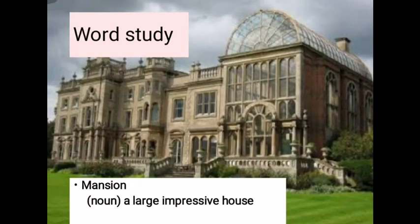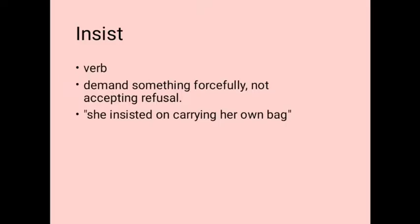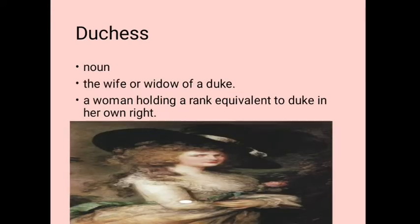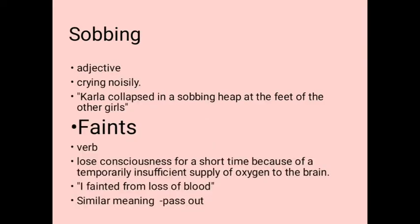Let's go through some vocabulary words. 'Mansion' is a noun meaning a large impressive house. 'Insist' is a verb meaning to demand something forcefully, not accepting refusal — for example, 'She insisted on carrying her own pack.' 'Duchess' is a noun meaning the wife or widow of a duke, or a woman holding a rank equivalent to a duke in her own right. 'Sobbing' is an adjective meaning crying noisily — for example, 'Clara collapsed in a sobbing heap at the feet of the other girls.'